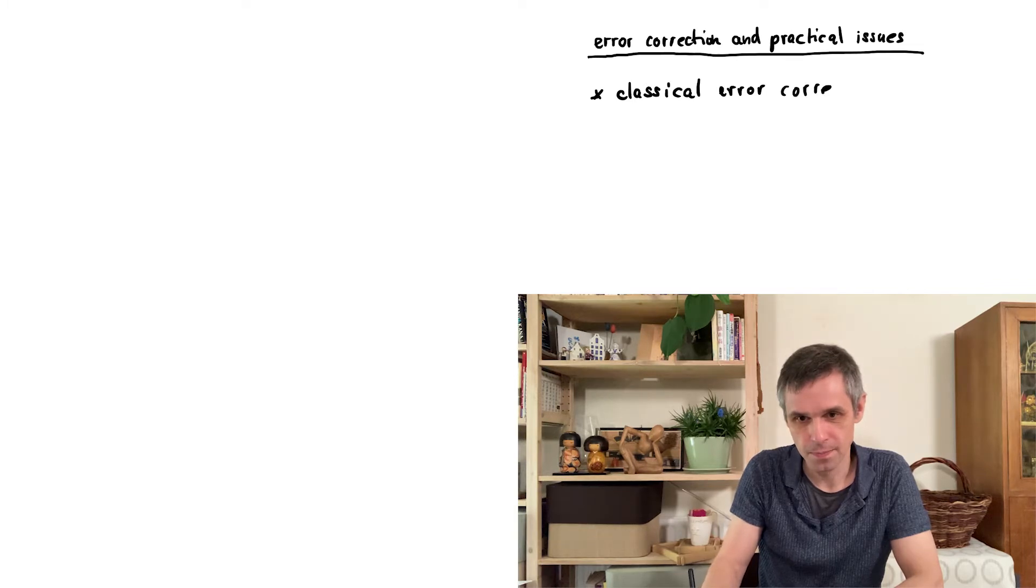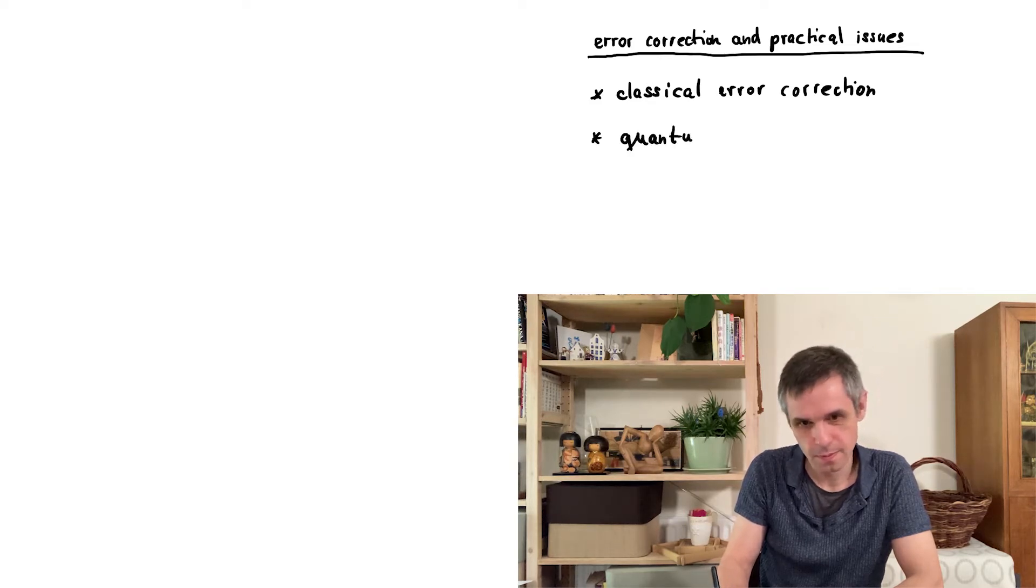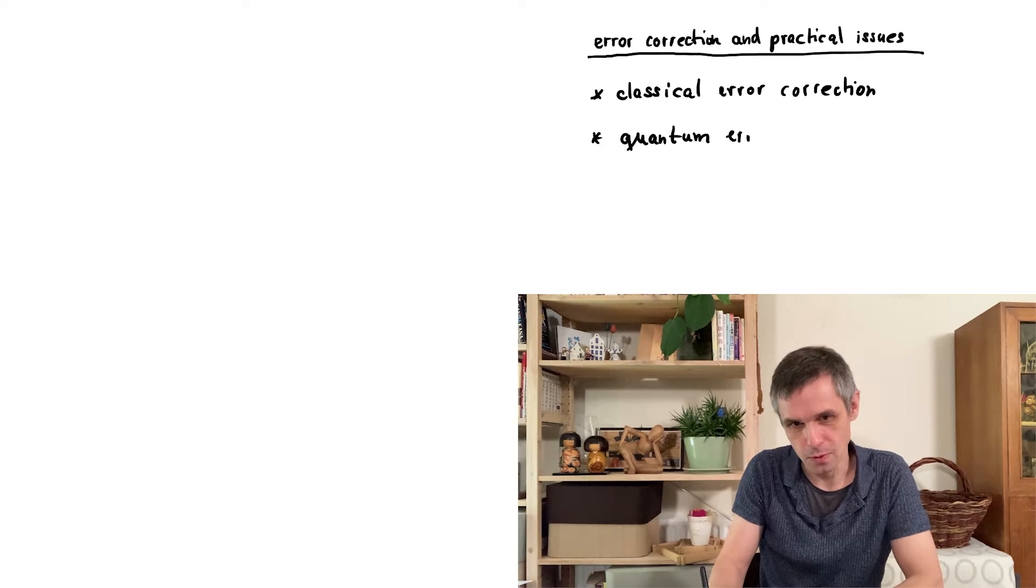We start by a discussion of errors on the classical level. So what type of errors can occur in a classical computer and how we can correct these, and then we translate this to the quantum setting. So we look at quantum error correction.